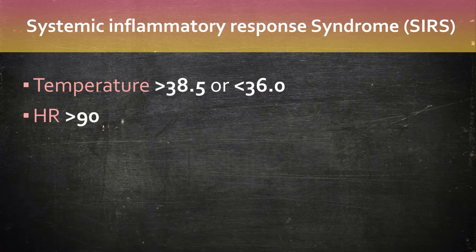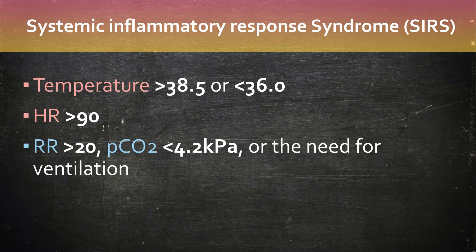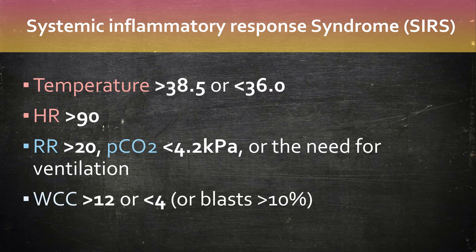A temperature of greater than 38.5 or less than 36, heart rate greater than 90, respiratory rate greater than 20, CO2 less than 4.2 or the need for ventilation, white cell count above 12 or below 4, or blasts greater than 10%. Having this criteria gives you SIRS.